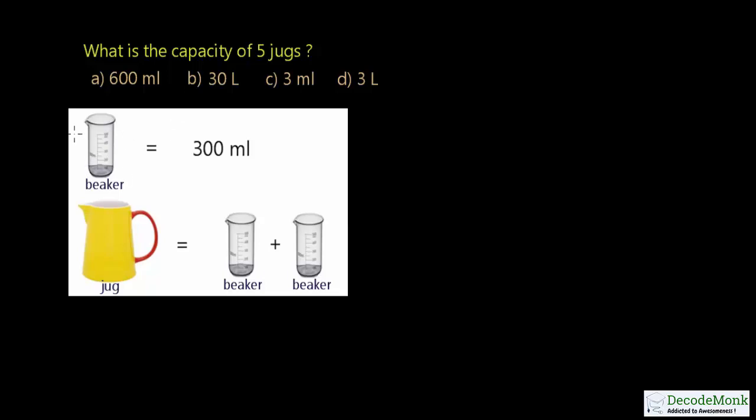In the figure, you are given one beaker with a capacity of 300 milliliters. First, you should know that 1 liter equals 1000 milliliters.